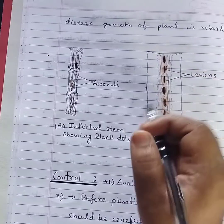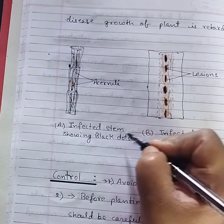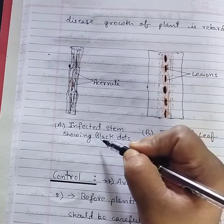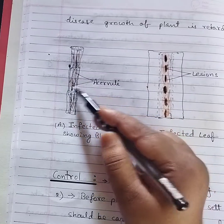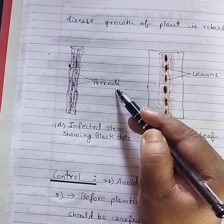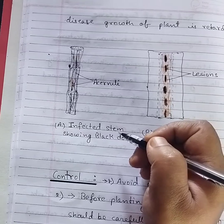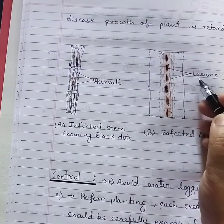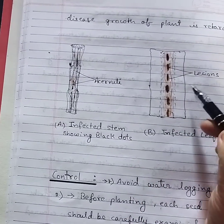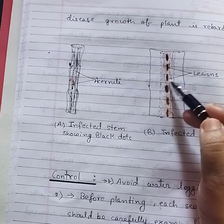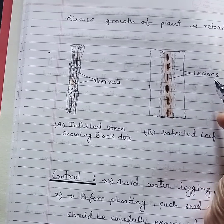Diagram A shows the infected stem, with the infected stem showing black dots, which are the acervuli. Diagram B shows the infected leaf, with lesions visible on the leaf.